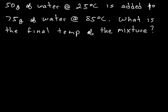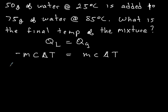So, 50 grams of water at 25 degrees Celsius added to 75 grams of water at 85 degrees Celsius. What is the final temperature of the mixture? This is a little bit different, but it's the same kind of problem. It is a heat lost equals heat gained problem. So, Q loss equals Q gained. Negative MC delta T equals MC delta T. Now, you're going to need to substitute it in for delta T in this case, because we want to know actually T final. So, that's going to become negative MC times Tf minus Ti equals MC times Tf minus Ti.